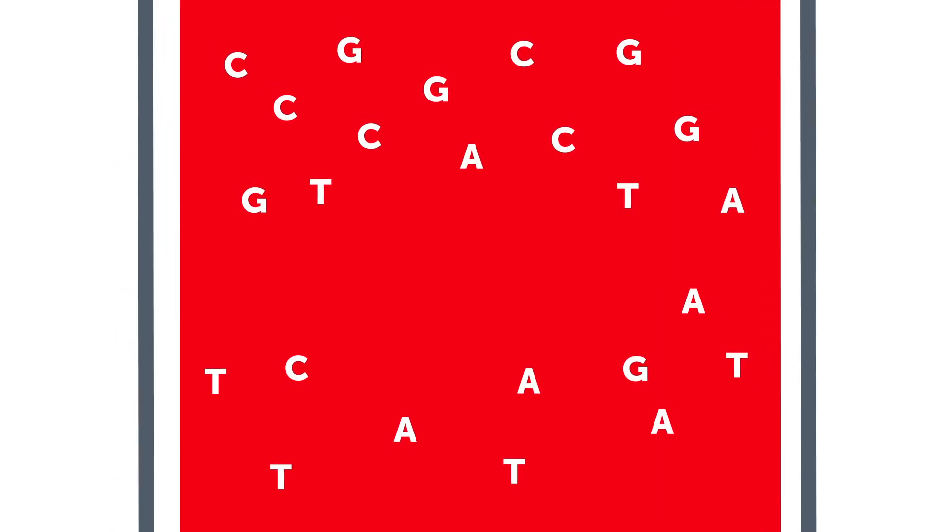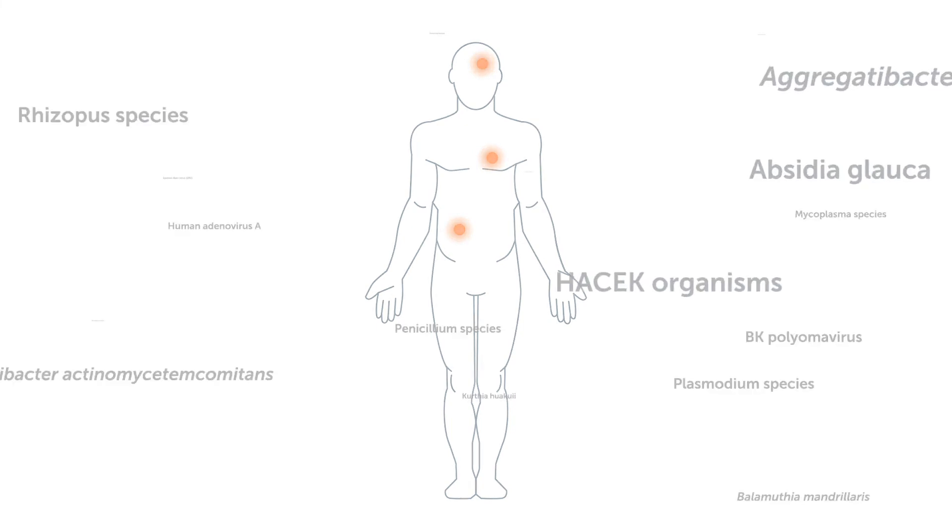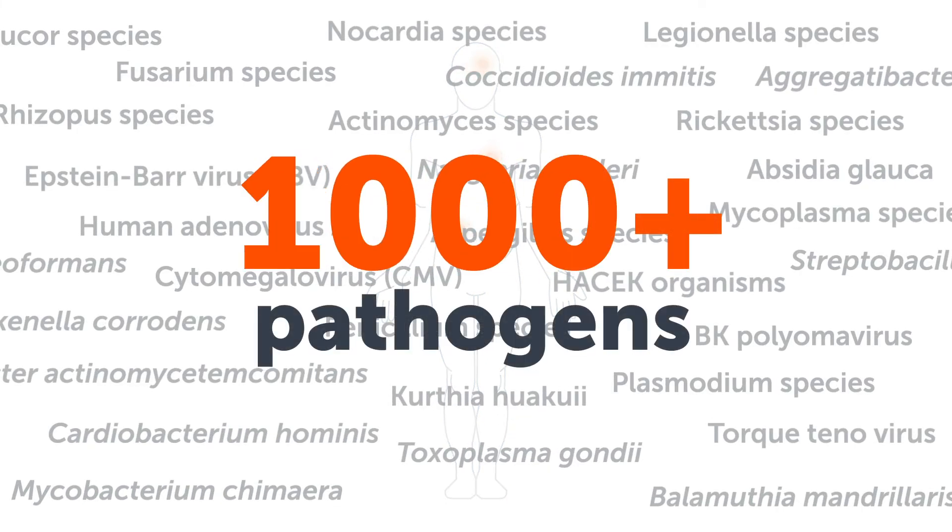With advanced genomics, it detects and identifies DNA fragments circulating in the blood from infections located throughout the body. This level of genomic insight rapidly catches over 1,000 clinically relevant pathogens, including those that cause deep-seated infections.